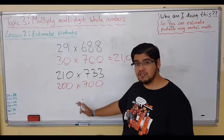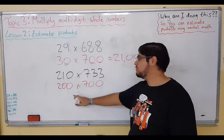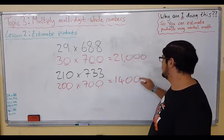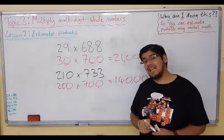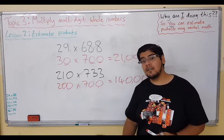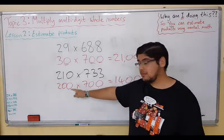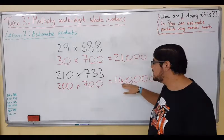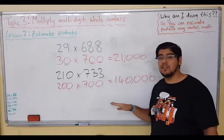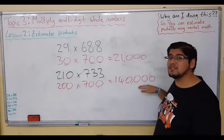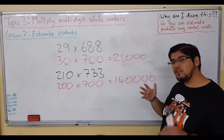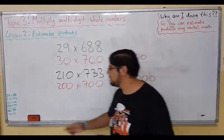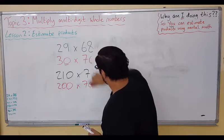Great, bunch of zeros again and easy compatible numbers. 2 times 7 is 14. How many zeros? One, two, three, four. Now, is this an over estimate or under estimate? We rounded down, we rounded down. Because both numbers are less than the actual numbers we're using, this must be an under estimate. That means the actual answer will be bigger than the estimate that we gave.